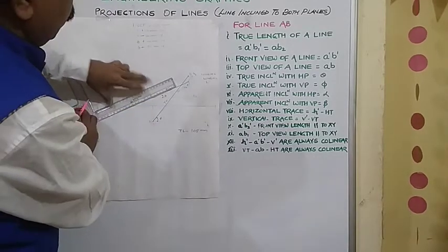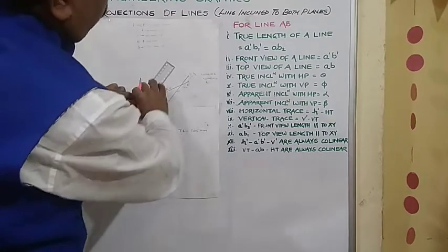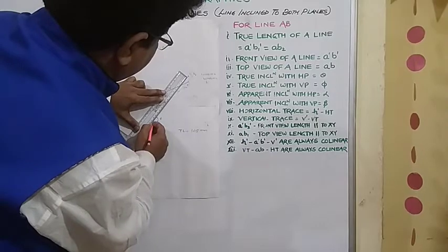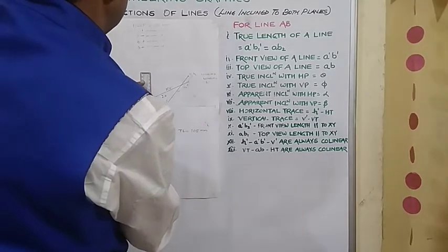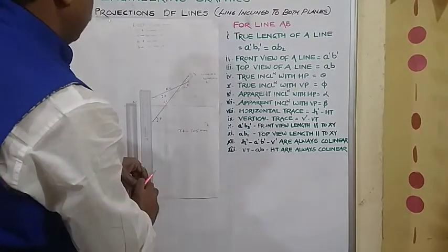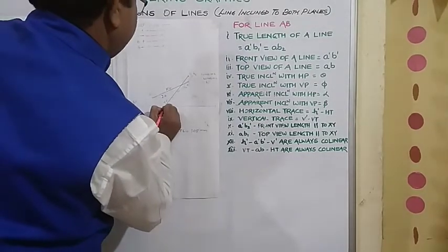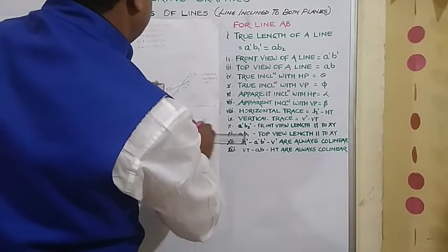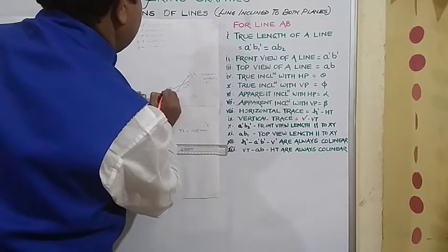Wherever it intersects this will be HT. Then from A B line that is top view of a line, draw faint, that is extend B further faint. And from H dash, from H dash draw the faint line. So this is your HT. H dash B is intersecting XY over here. So this is V dash. From V dash wherever it intersect front view of line, this is VT. So H dash HT is there. V dash VT is there.